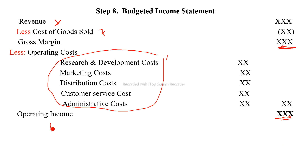Finally, as income and expense items are brought together, this leads to the budgeted income statement. This completes the manufacturing operating budget overview. In the next demo we will look at a full example. Please subscribe, comment, and share.